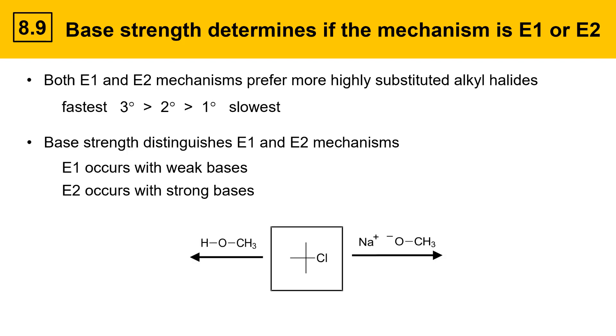Here's an example of two reactions of an alkyl halide. This is a tertiary alkyl halide, which is a good substrate for both E1 and E2. On the left side, we have a weak base, methanol, and I can tell it's weak because the oxygen in this structure is neutral. That'll give an E1 reaction, and it gives the following alkene product as well as the coproducts shown here.